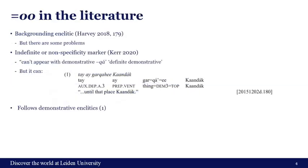In previous literature, Andrew Harvey has analyzed it as a backgrounding enclitic, although he already mentions some problems with it. Care 2020 analyzed it as an indefinite or possibly non-specific marker because it can't appear with demonstrative 'qa'. However, as we can see in example 1, there is a case where it does appear with 'qa', following the demonstrative enclitic. Because it follows the demonstrative enclitic, I say the marker itself is also an enclitic, though it has been analyzed as a suffix elsewhere.